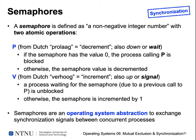So the process calling the P function is blocked and has to wait until the semaphore is free again. Otherwise, the P function just decrements the non-negative integer value of the semaphore and continues to run, so we can enter the critical section — because a value larger than zero indicates the critical section is free.